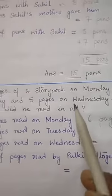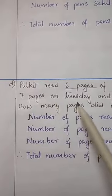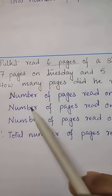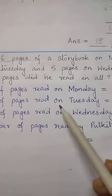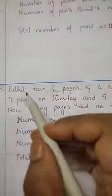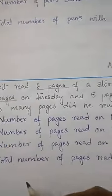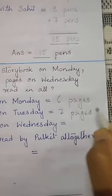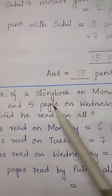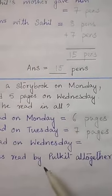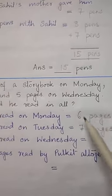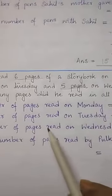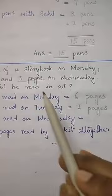Let's go to the second part: 7 pages on Tuesday. Statement — number of pages read on Tuesday is equal to 7 pages. Third part: 5 pages on Wednesday. Number of pages read on Wednesday is equal to 5 pages.